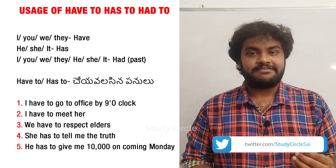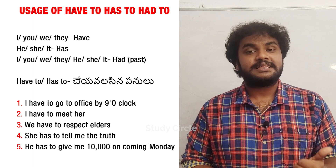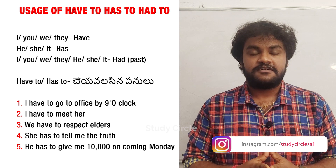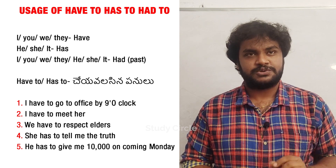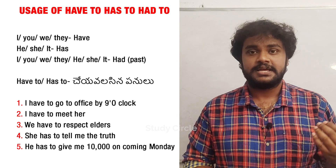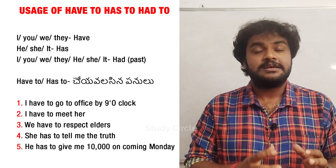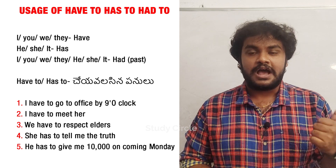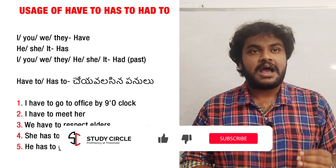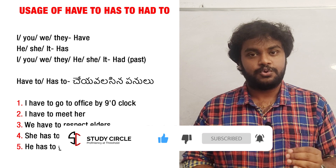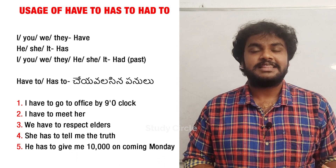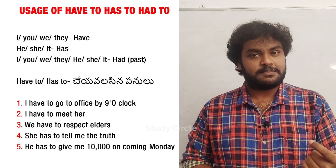Have to, has to, and had to. Have to and has to. For example: I have to go to office by 9 o'clock. That means, I have to go to office by 9 o'clock. Here, 'have to' is used with 'I'.